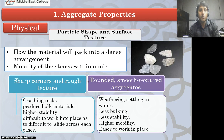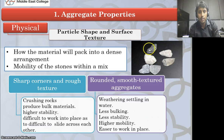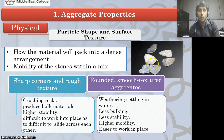The next aggregate property is particle shape and surface texture. According to the shape and surface texture of the aggregate, we have two types: sharp corners and rough texture aggregates, and rounded smooth texture aggregates. If you observe, this one has a sharp corner and rough texture, while the other is somewhat rounded and smooth. These properties differ between the two types — for example, rounded smooth texture aggregates are less bulking and have less stability.